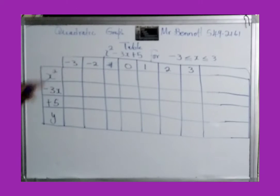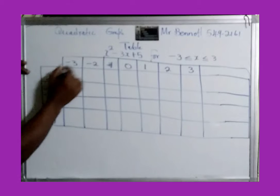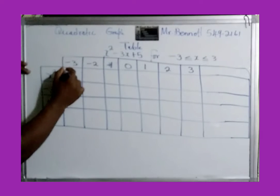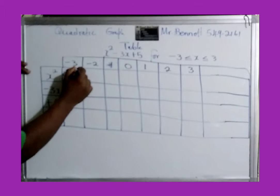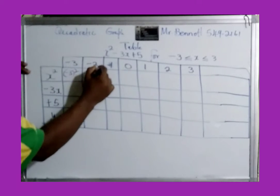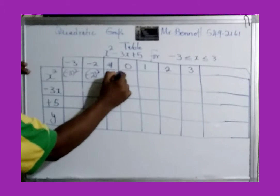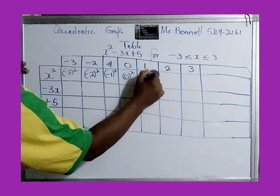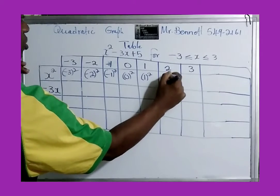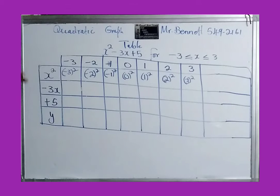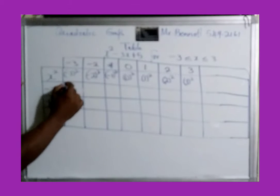This first row says x squared. So where x is negative 3, it would be negative 3 squared. All of them would be squared in this row: negative 2 squared, negative 1 squared, 0 squared, 1 squared, 2 squared, 3 squared.